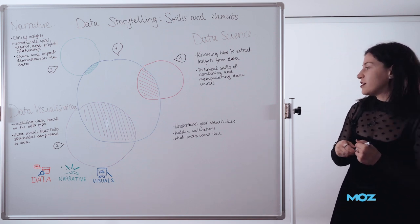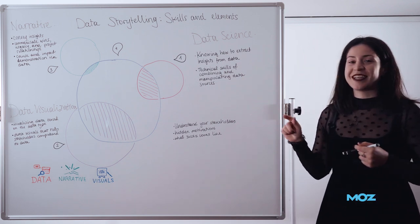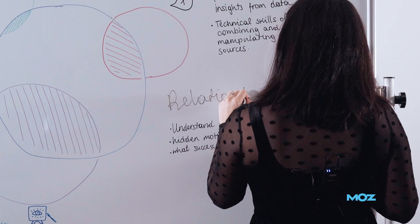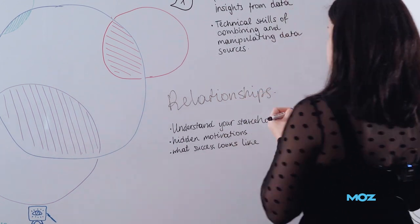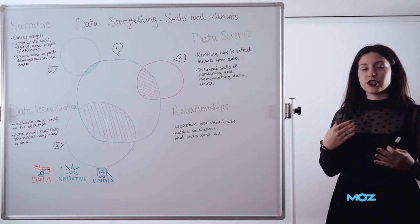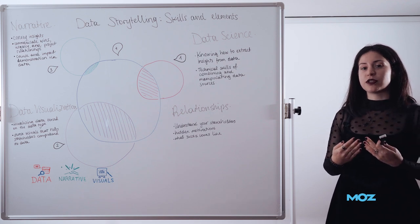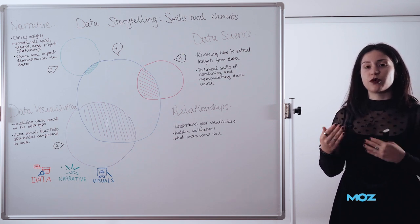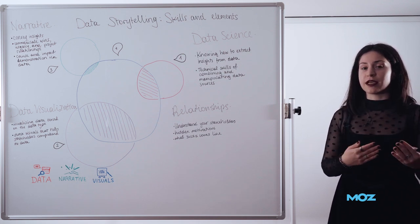And the fourth component, the big circle here that typically people don't really consider in data storytelling, is actually the relationships. So when we talk about relationships, it's all about the relationships that you have with your stakeholders. This is something that typically you will need to work on as you are working with your stakeholders.